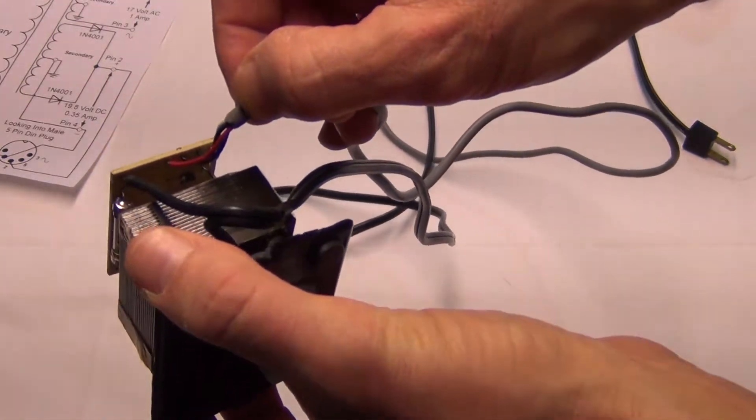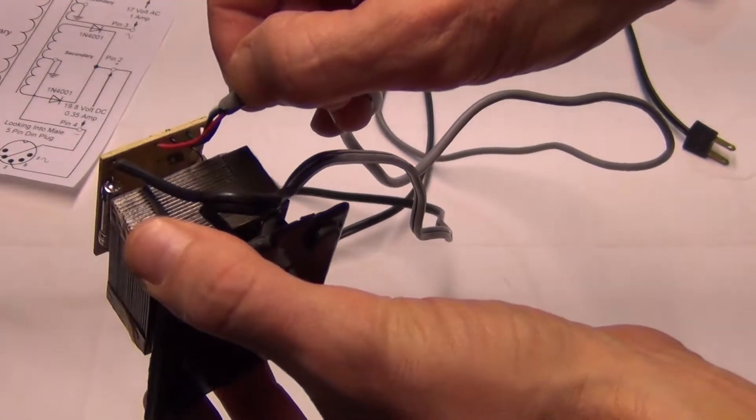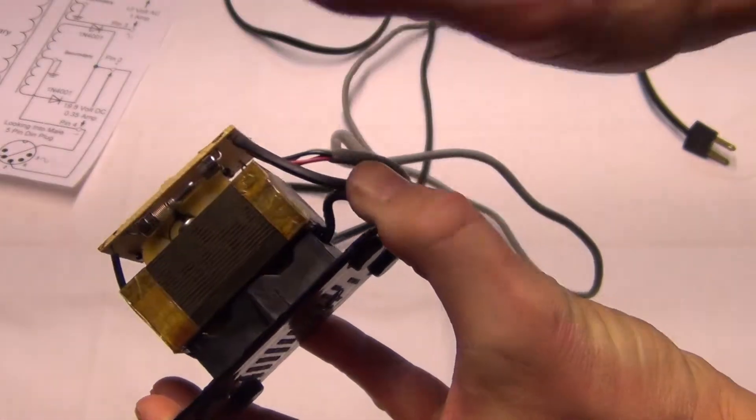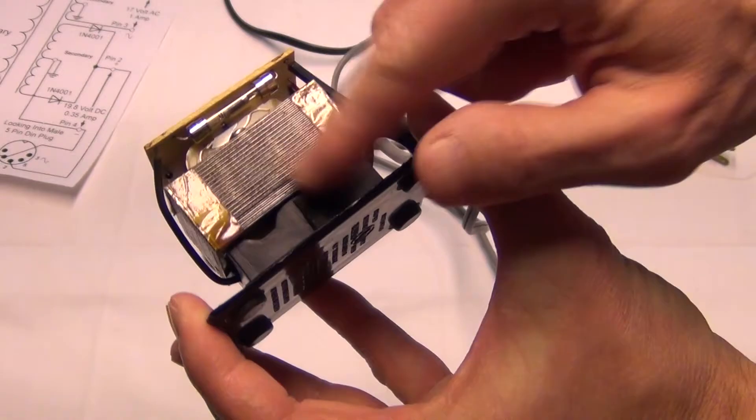I don't know if you can kind of, yeah, you can see it in there. So there's just two diodes, a fuse, and the transformer.